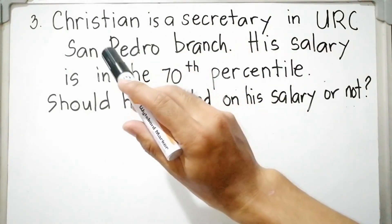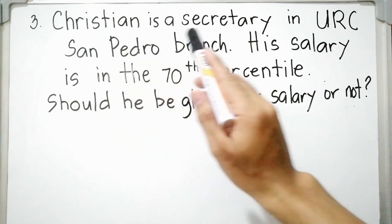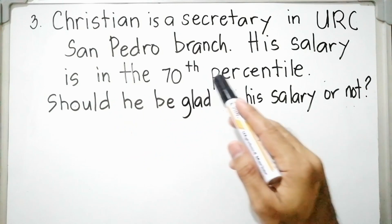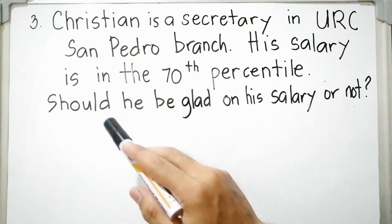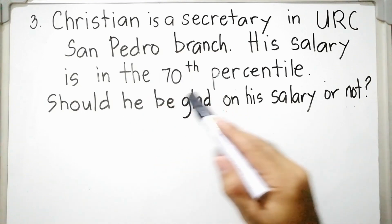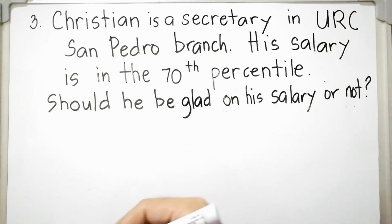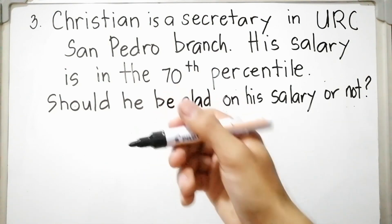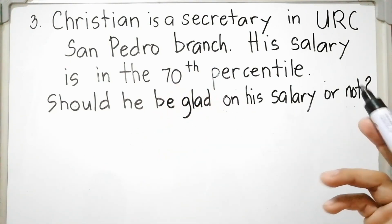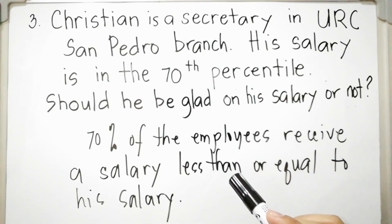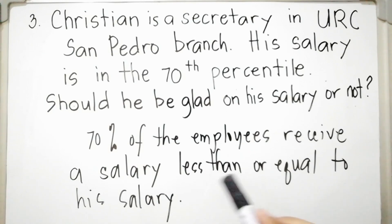For item number 3, Christian is a secretary in URC San Pedro branch. His salary is in the 70th percentile. Should he be glad about his salary or not? Interpreting this: 70% of the employees receive a salary less than or equal to his salary. He should be glad because only 30% of the employees receive greater than or equal to his salary.